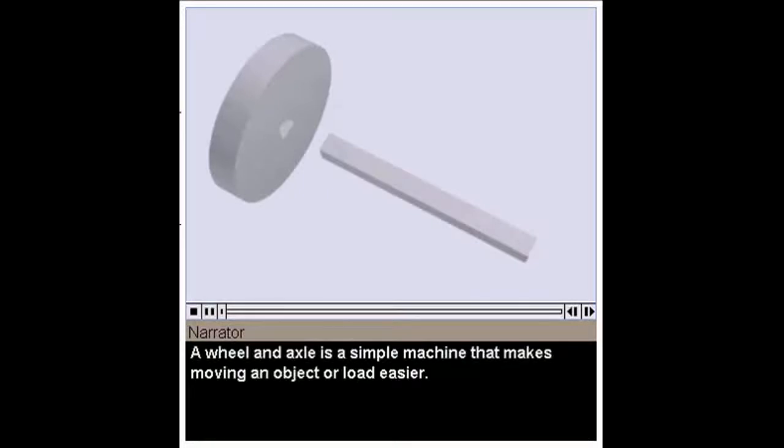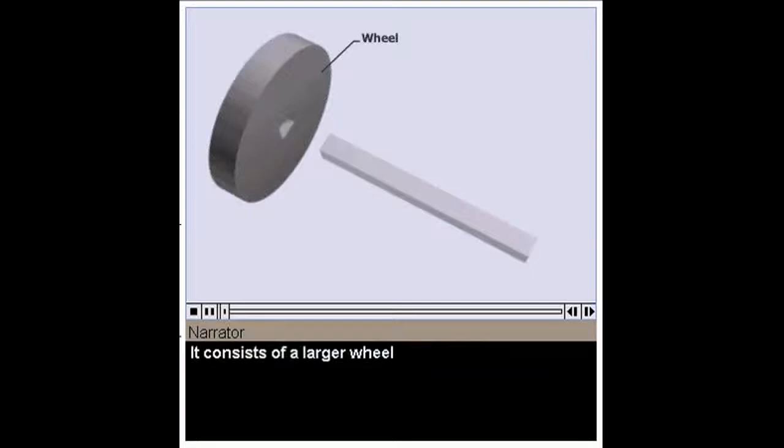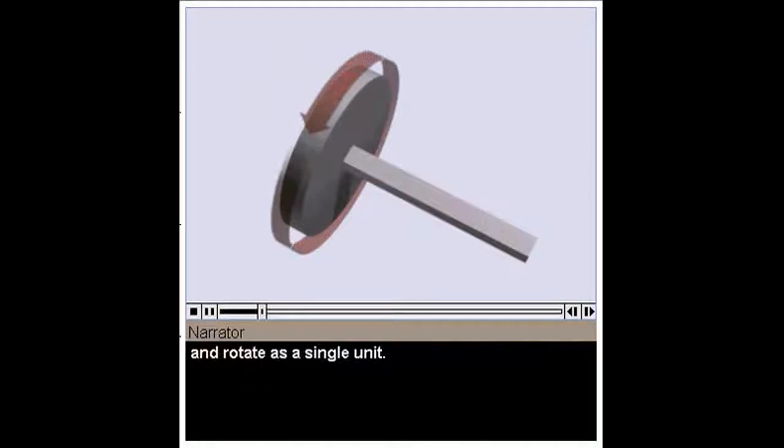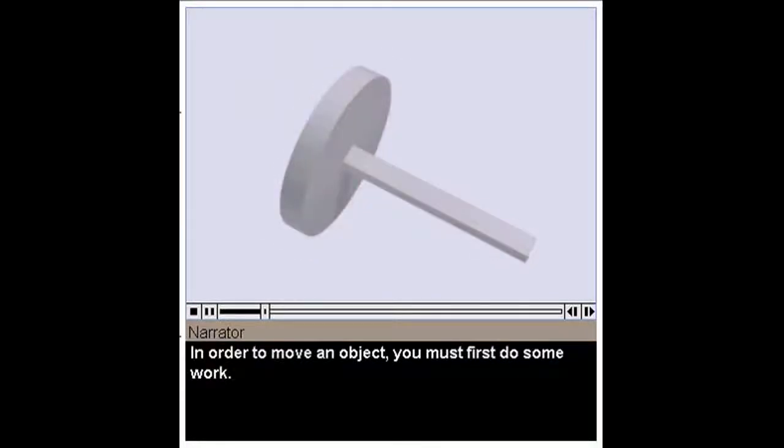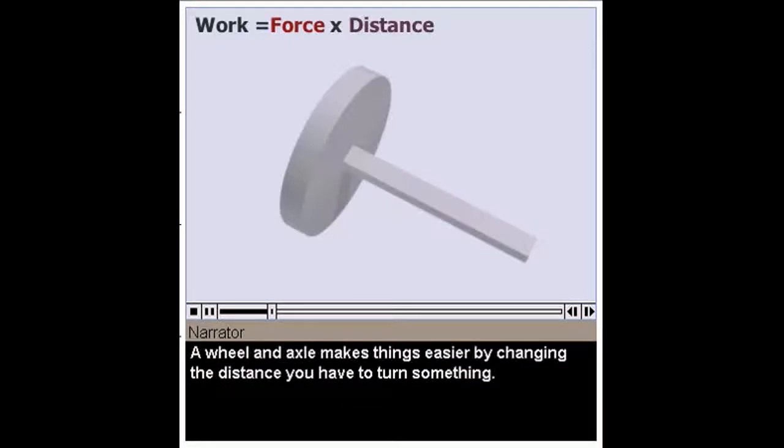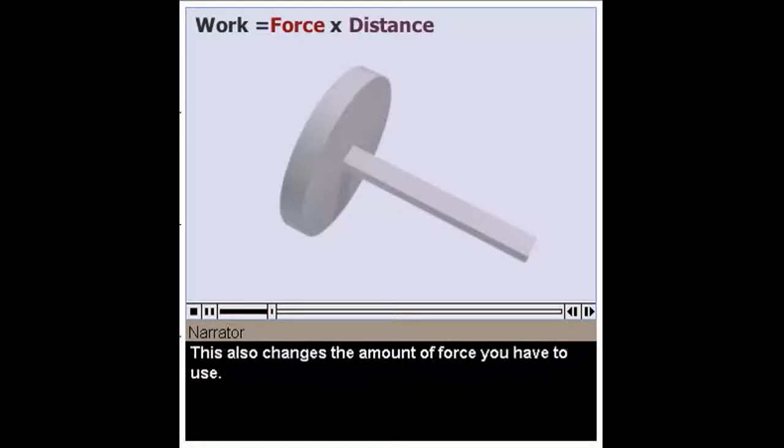A wheel and axle is a simple machine that makes moving an object or load easier. It consists of a larger wheel attached to a smaller axle. It acts as a machine only if the wheel and the axle are fixed together and rotate as a single unit. In order to move an object, you must first do some work. The amount of work you do is equal to the force you use, or the effort, times the distance you apply it. A wheel and axle makes things easier by changing the distance you have to turn something. This also changes the amount of force you have to use.